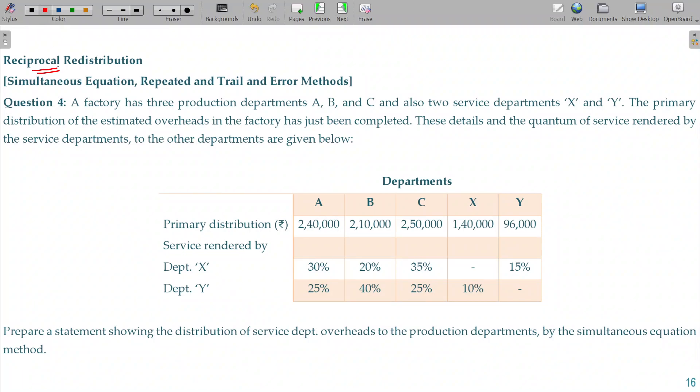Reciprocal redistribution model layer. I am going to solve question number 4 where the simultaneous equation method is going to be followed. A factory has three production departments A, B and C, also two service departments X and Y. The primary distribution of the estimated overheads in the factory has just been completed. These details and the quantum of service rendered by the service departments to the other departments are given below. Prepare a statement showing the distribution of service department overheads to the production departments by simultaneous equation method.